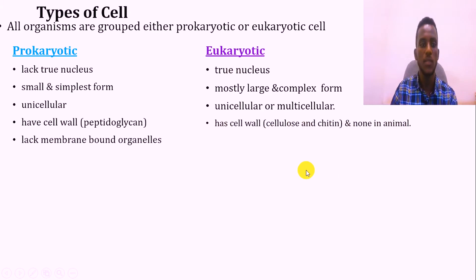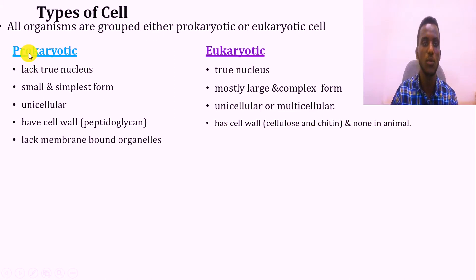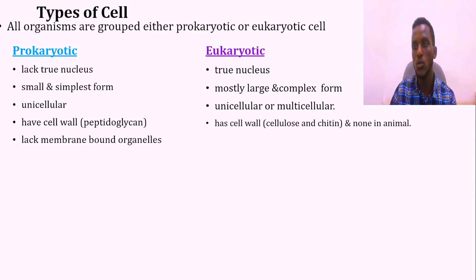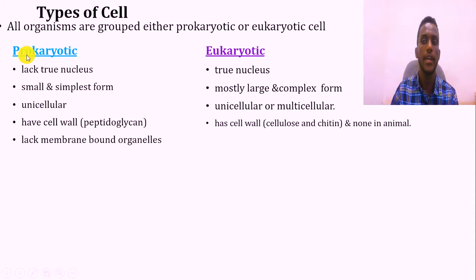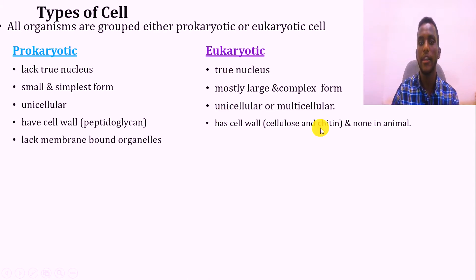Based on the presence or absence of membrane-bounded organelles: membrane-bounded organelles are not found in prokaryotic cells. But in case of eukaryotic cells, these organelles are found.